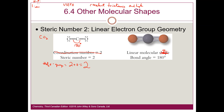Another example is hydrogen cyanide (HCN). The triple bond counts as just one group. The number of electron groups on the carbon is 2 + 0 = 2. I don't count the lone pair on the nitrogen because nitrogen is an outer atom, not an inner atom. So two groups means linear electron group geometry and linear molecular geometry. SCO is another example of linear electron group geometry and linear molecular geometry.